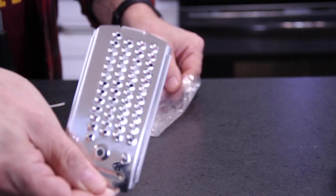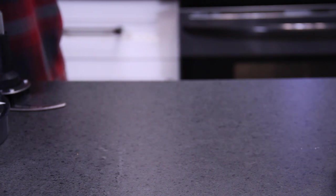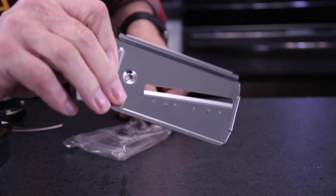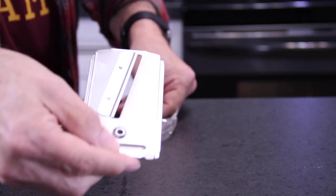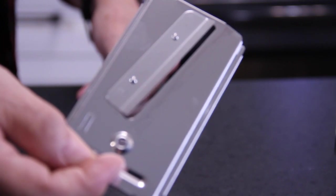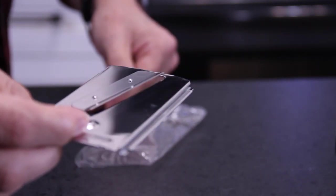The coarse slicing blade, which is fantastic for cucumbers or anything you want widely sliced. And last but not least, the fine slicing blade. I used it for jalapeno peppers and it worked absolutely superbly.